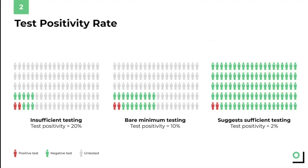In the second scenario, there are a total of twenty colored icons, and again two which tested positive but eighteen which tested negative, which means that the test positivity rate was two out of twenty, or ten percent. Finally, in the third scenario, every single person in the community of a hundred people was tested. Again, two came back positive and the rest came back negative. This brings us to a test positivity rate of two out of a hundred, or two percent.